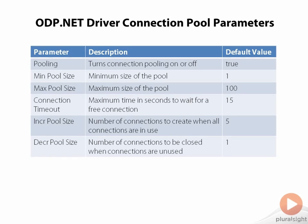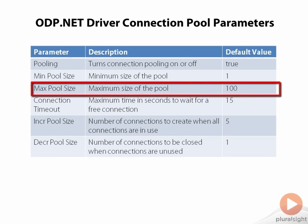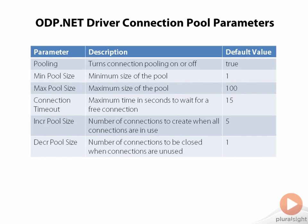Generally, the defaults just work fine. So if you don't specify any of these parameters, Oracle will just use these default values. One parameter that you may be interested in is that by default, the maximum pool size is 100. This maximum applies to each connection pool, so if your application connects to two different Oracle databases, each pool can have a total of 100 physical connections in it.